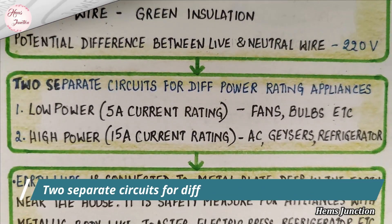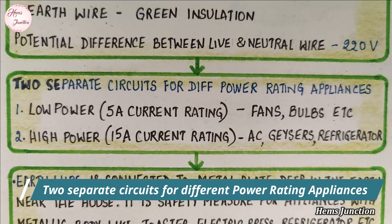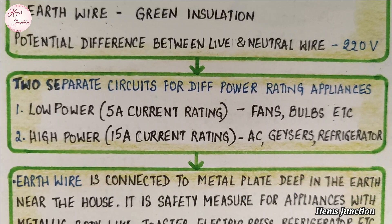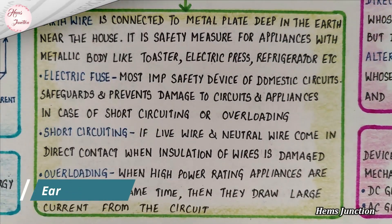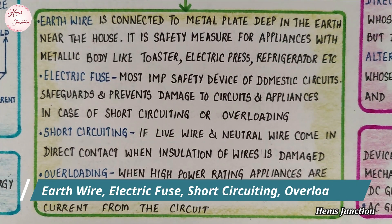There are two separate circuits for different power rating appliances. Some more terms: earth wire, electric fuse, short circuiting, and overloading.